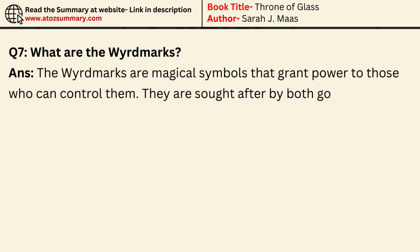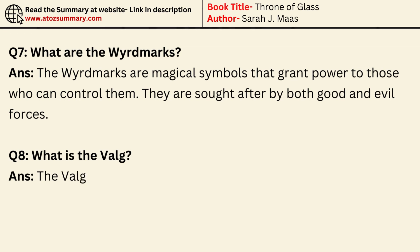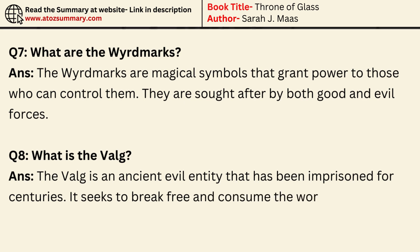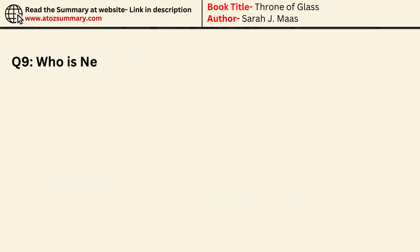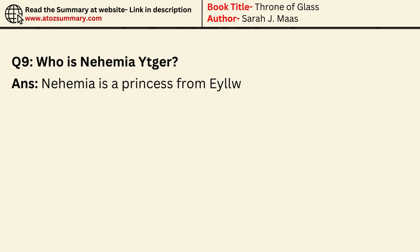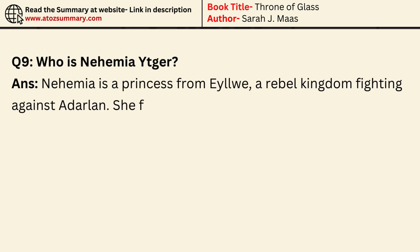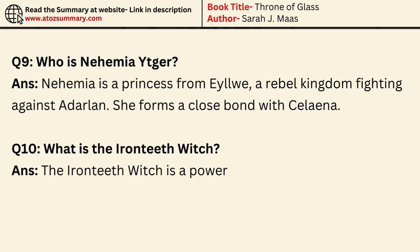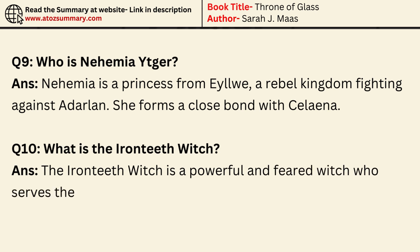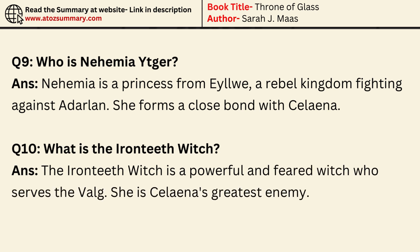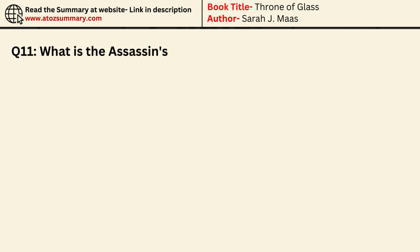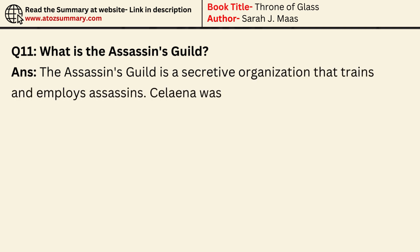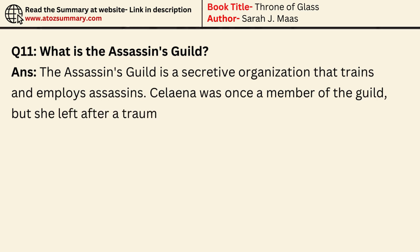What is the Valg? The Valg is an ancient evil entity that has been imprisoned for centuries. It seeks to break free and consume the world. Who is Nehemia Itgar? Nehemia is a princess from Islewe, a rebel kingdom fighting against Adarlin. She forms a close bond with Selina. What is the Iron Teeth Witch? The Iron Teeth Witch is a powerful and feared witch who serves the Valg — she is Selina's greatest enemy. What is the Assassin's Guild? The Assassin's Guild is a secretive organization that trains and employs assassins. Selina was once a member of the guild but left after a traumatic event.